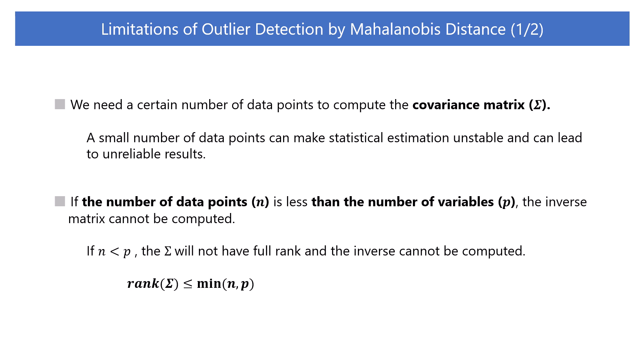However, outlier detection using Mahalanobis distance has several limitations. First, computing the covariance matrix requires a certain number of data points. Without a sufficient number of data points for the number of variables, it becomes difficult to reliably estimate the distribution and covariance of each variable. A small number of data points can make statistical estimation unstable and lead to unreliable results. Mathematically, if the number of data points is less than the number of variables, the inverse matrix cannot be computed.